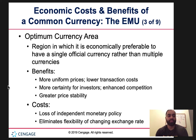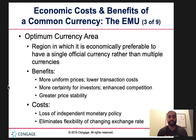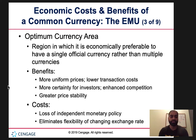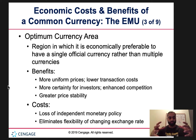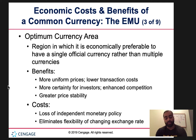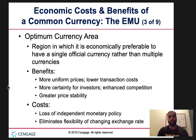The optimum currency area is a region in which it is economically preferable to have a single official currency rather than multiple currencies. Benefits of one currency across a large area like Europe include more uniform prices, lower transaction costs — not having to convert money into a different currency — more certainty for investors, enhanced competition as you're open to more markets, and greater price stability with less fluctuation. This is better for consumers.